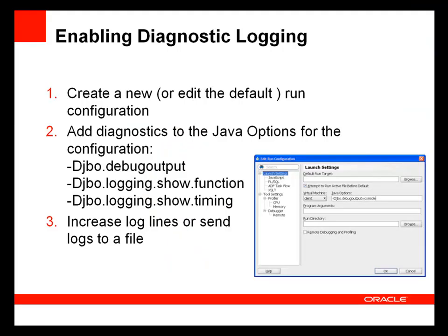Another technique helpful for debugging is enabling diagnostic logging. ADF diagnostic logging allows you to see all the details about ADF business components methods, arguments, SQL queries, etc. You enable diagnostics for a run configuration — either create a new configuration or edit the default run config. Specify the diagnostic options in the Java options field, for example the most common setting: -Djbo.debugoutput=console. You might also wish to increase the number of lines displayed in the log console of JDeveloper or send the logs to a file.